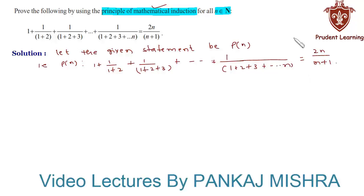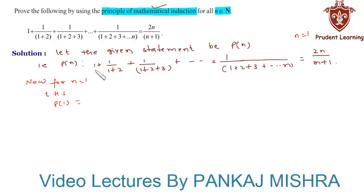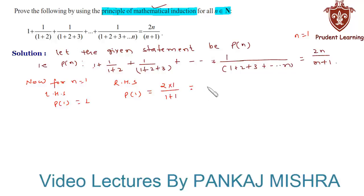Our first step is to check whether the equation holds true for n equal to 1. For n equals 1, on the left hand side P(1) equals 1, and on the right hand side we substitute n equal to 1 to get 2 into 1 upon (1 plus 1), that is 2 upon 2, which gives us 1.